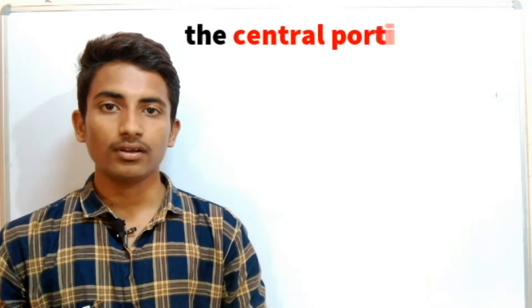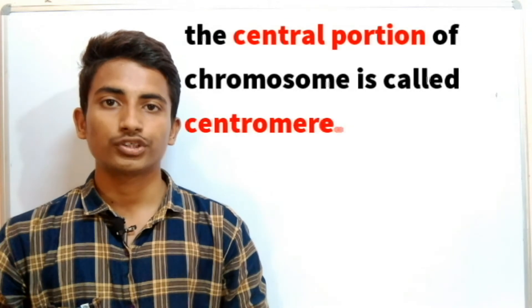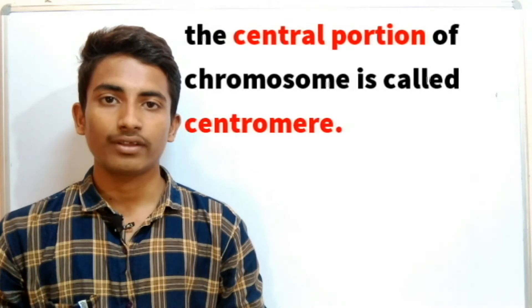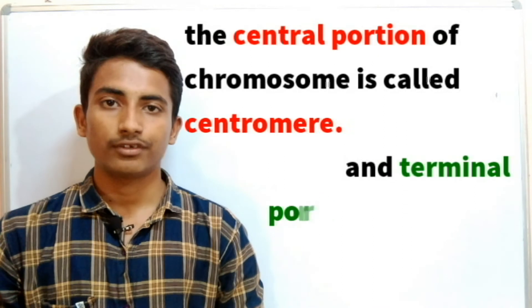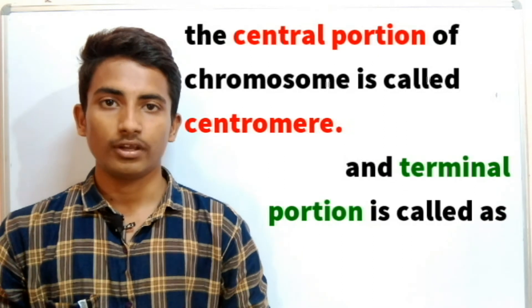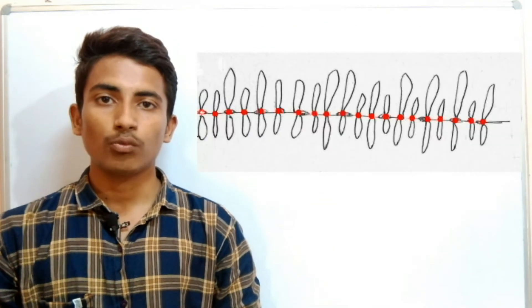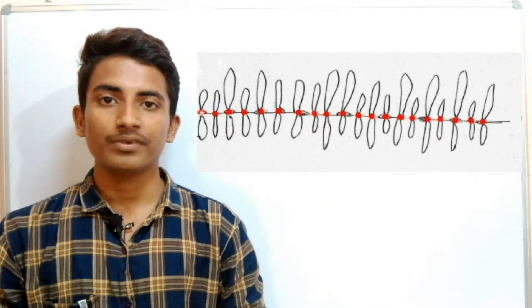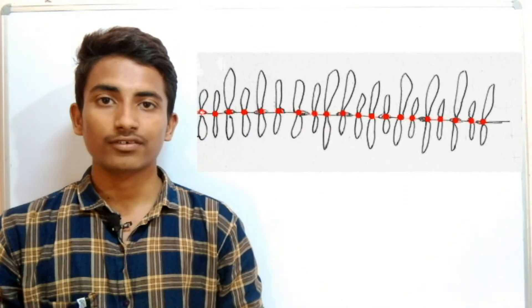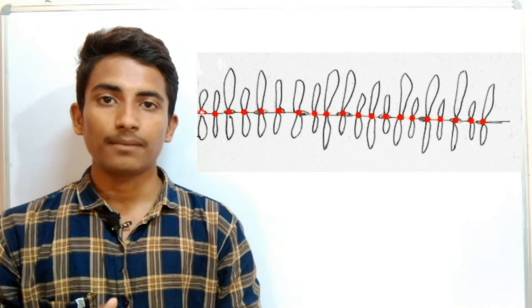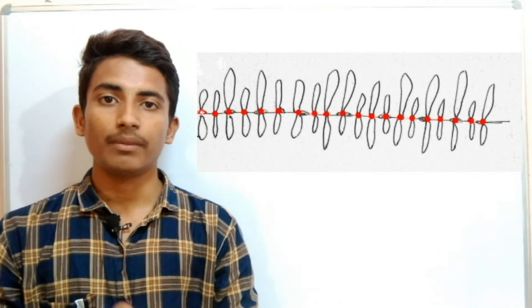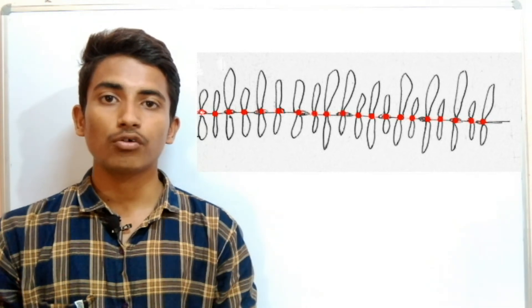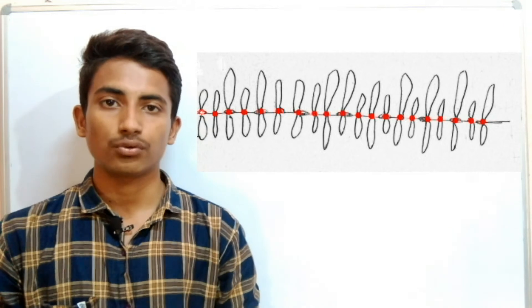The central portion of the chromosome is called the centromere and the terminal portion is called the telomere. Second, chromomeres are bead-like structures present along the length of the axial filament.